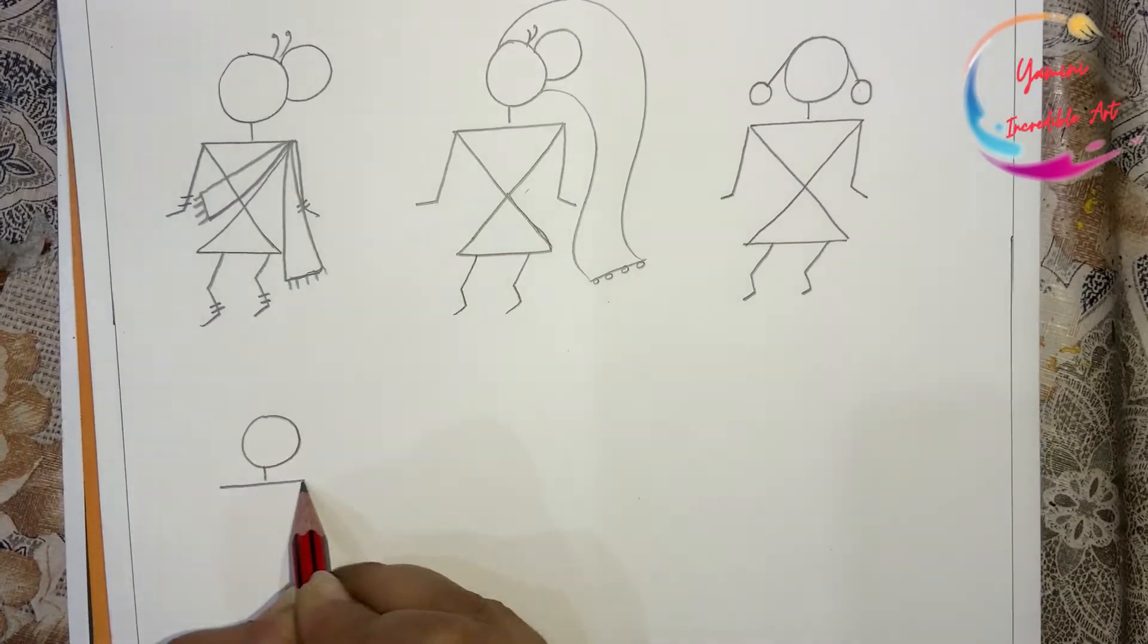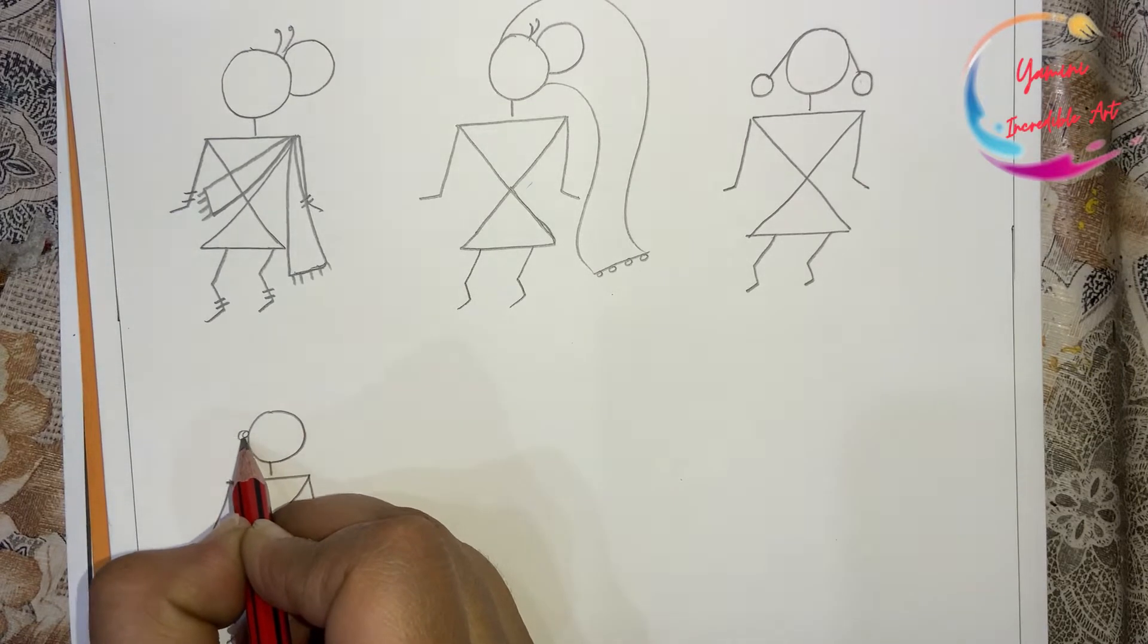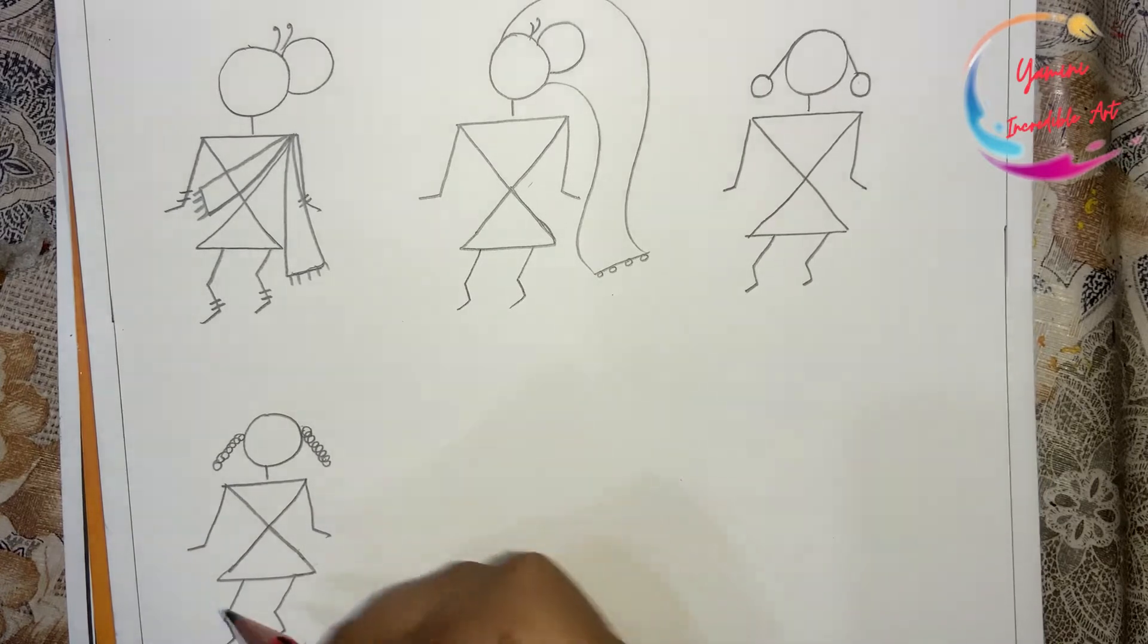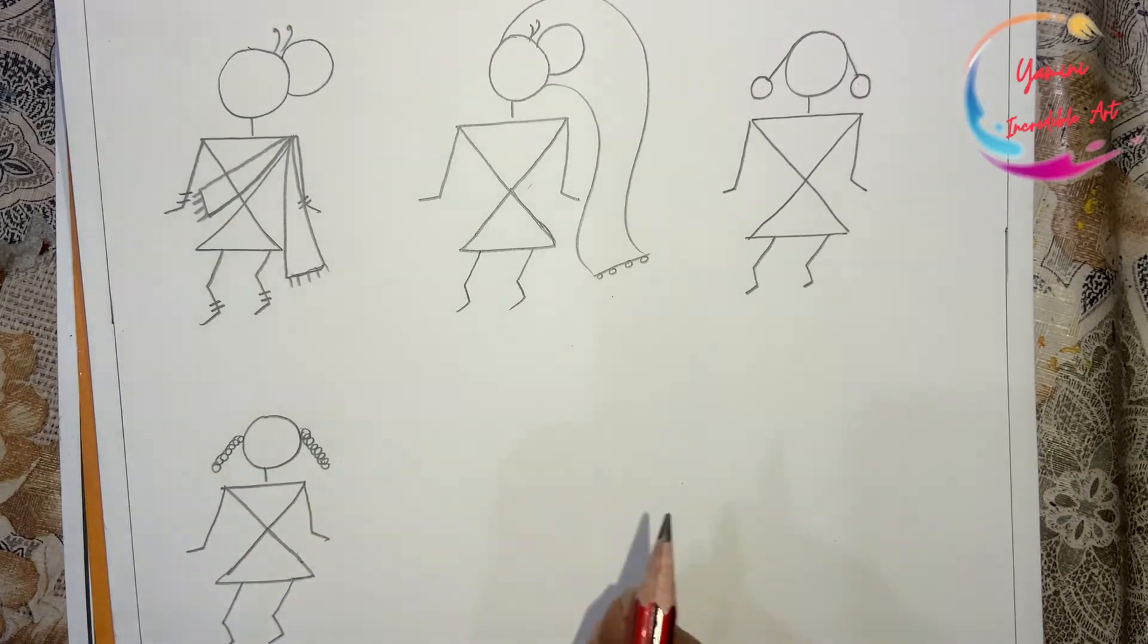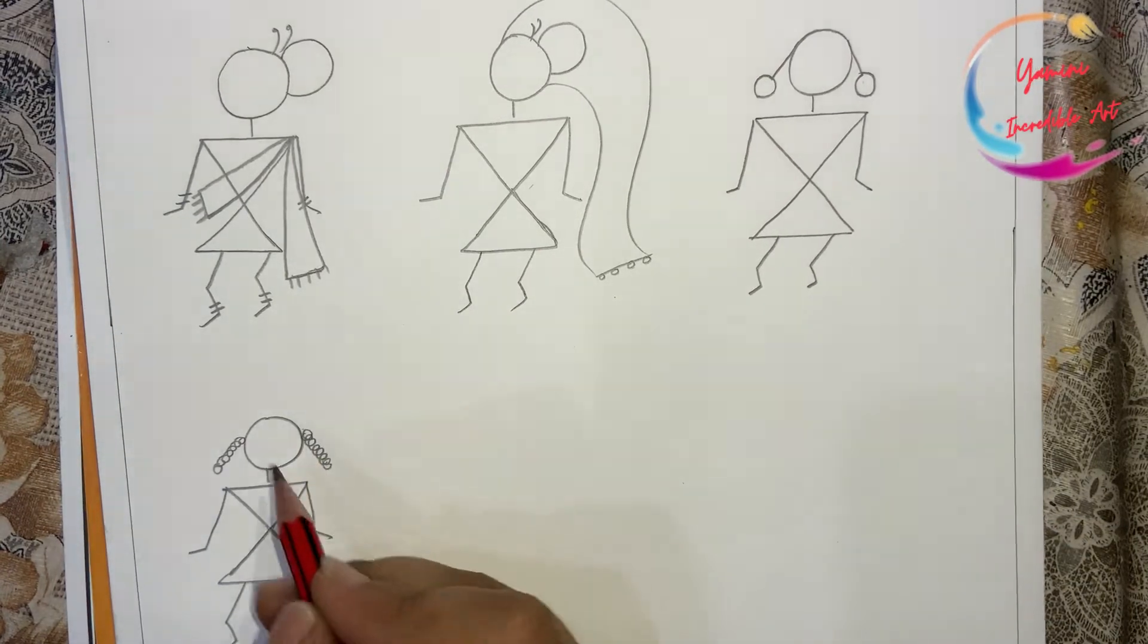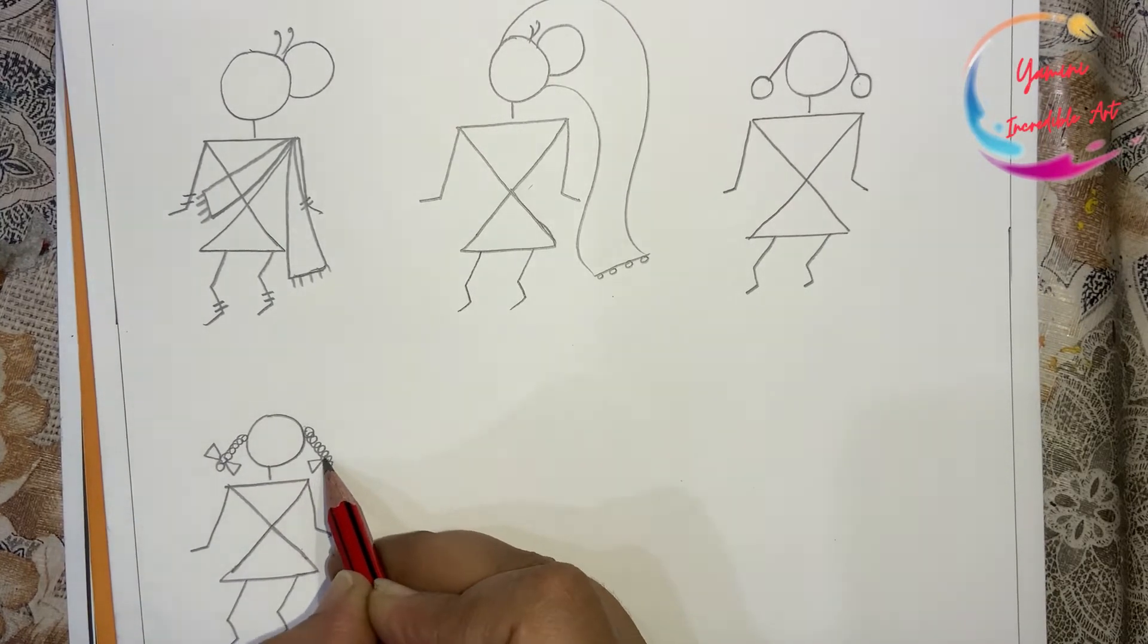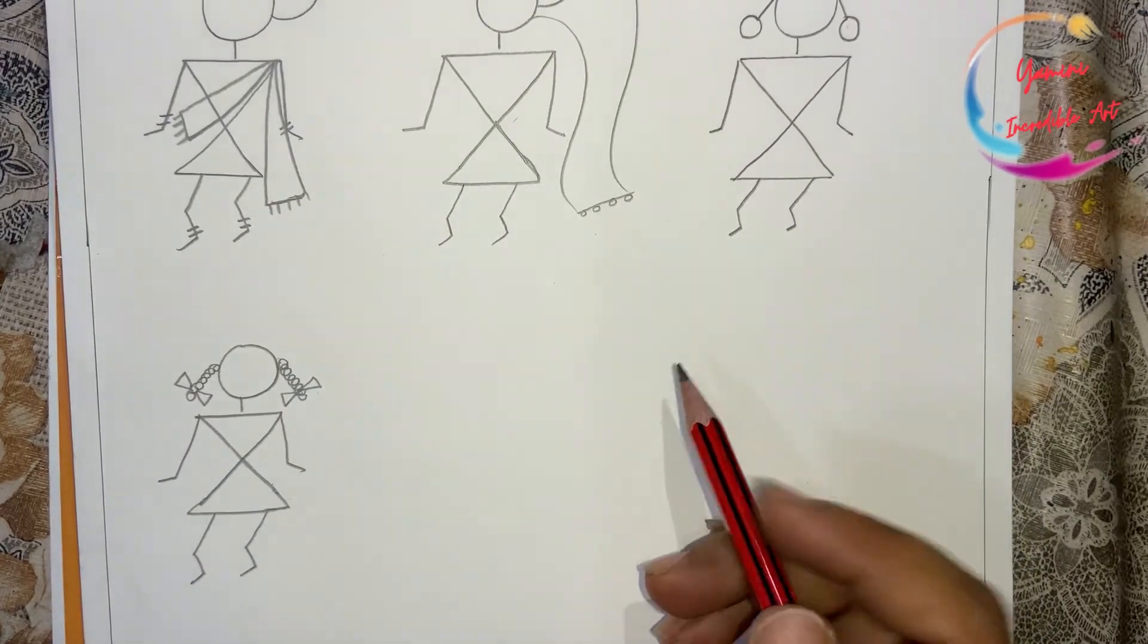But we will change the little stitches. We will make a scribble like this. If someone has a problem with scribbles, I will give a video on types of shading. I will give a link in the description box and in the i button. You can see the video there and you will know how to do the scribbles. As we used to do in school, they used to make a scribble. So I have given this technique. So we have learned two types of girls here.